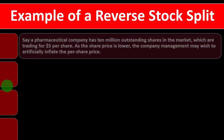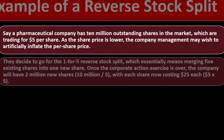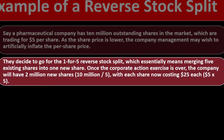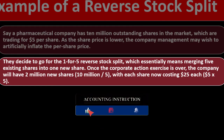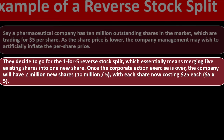Here's an example of a reverse stock split. Say a pharmaceutical company has 10 million outstanding shares trading at $5 per share. The company management wishes to artificially inflate the per share price — $5 is looking too low. They decide to go for a 1-for-5 reverse stock split, which means merging five existing shares into one new share. Once the corporate action is complete, the company will have 2 million new shares (10 million divided by 5), with each share now costing $25 rather than $5.